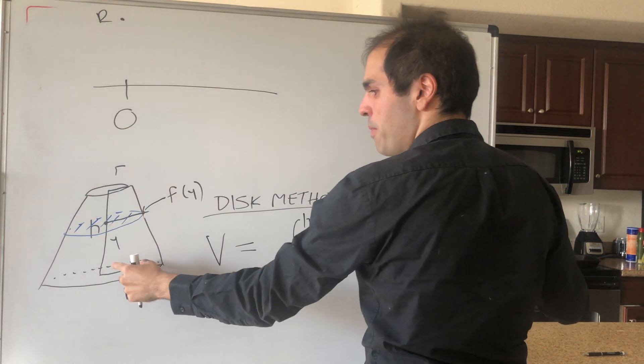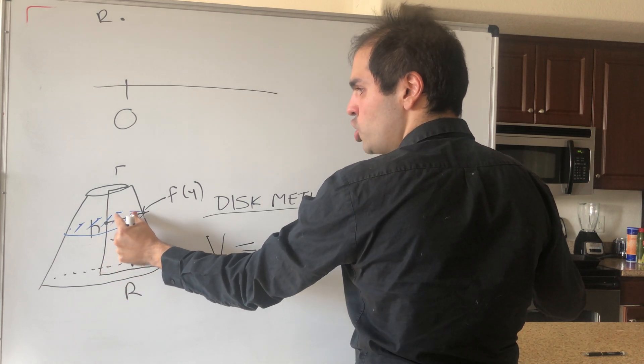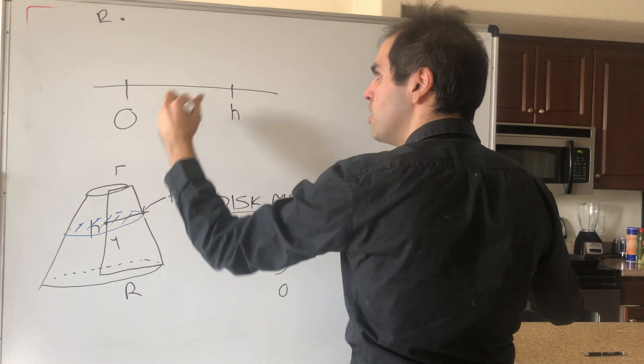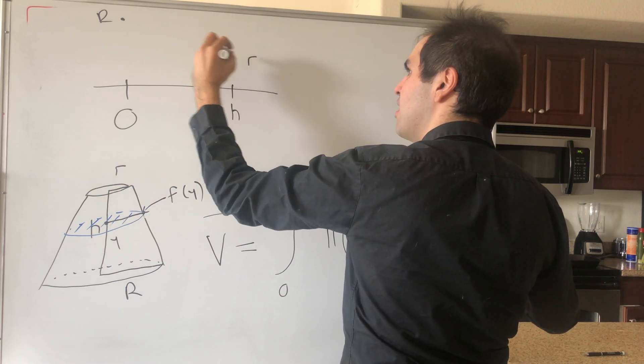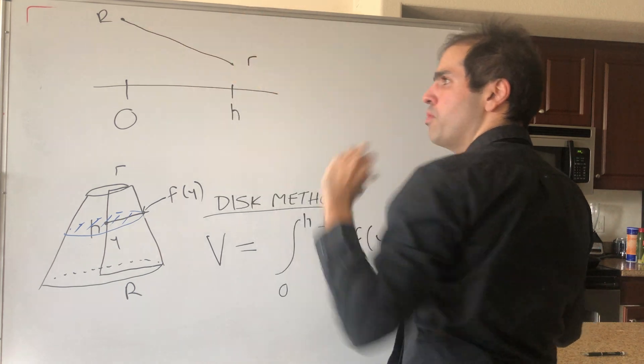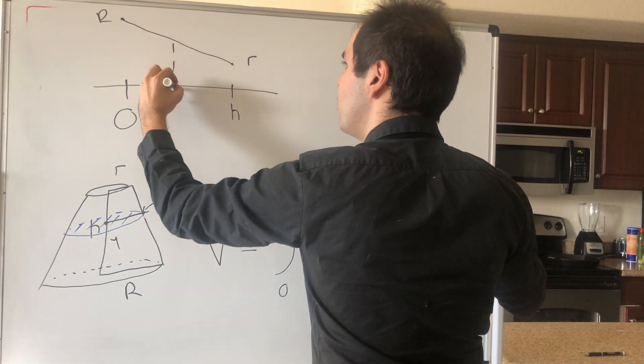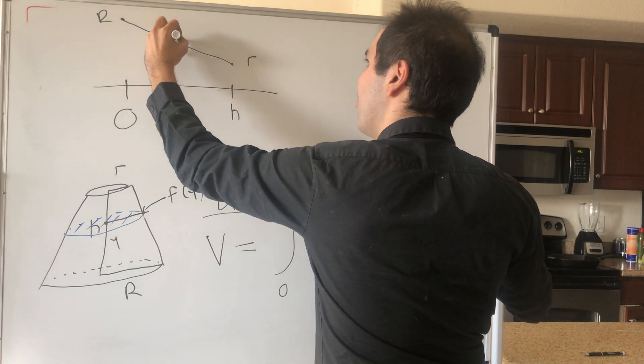So at 0 it starts at capital R, and then the radius is shrinking and shrinking, such that at h the radius is very small, little r. And so in particular, the equation of the function is just a line. So given y, let's find f of y, but what is the slope here?